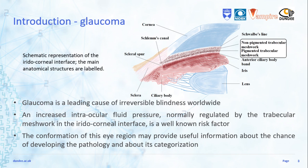Glaucoma is the second leading cause of irreversible blindness in the world after cataract. A well-known risk factor associated with its development is the increase in intraocular fluid pressure, which is normally regulated by a specialized anatomical structure called the trabecular meshwork, located at the iridocorneal interface, also called the iridocorneal angle, in the anterior eye chamber.